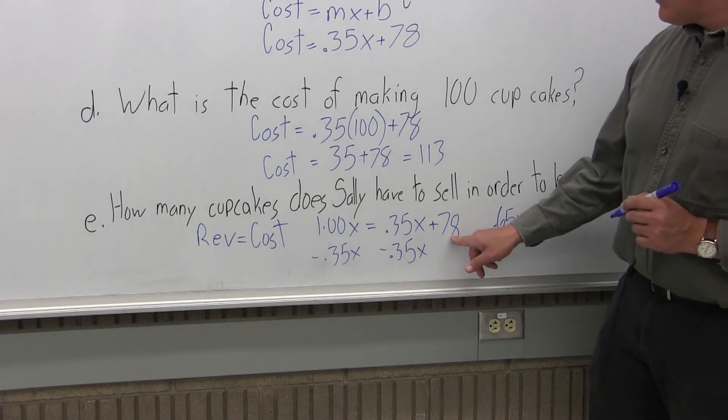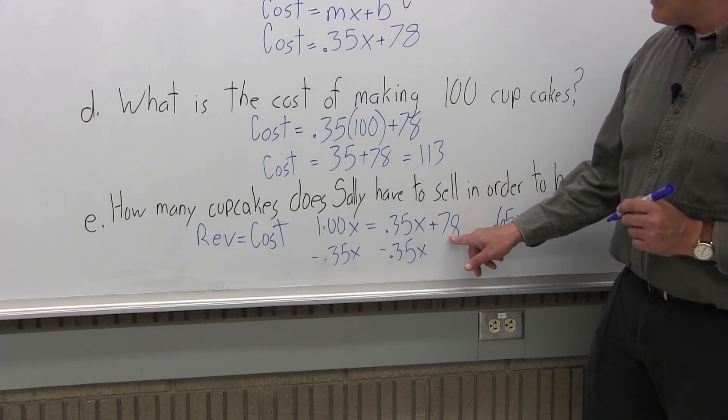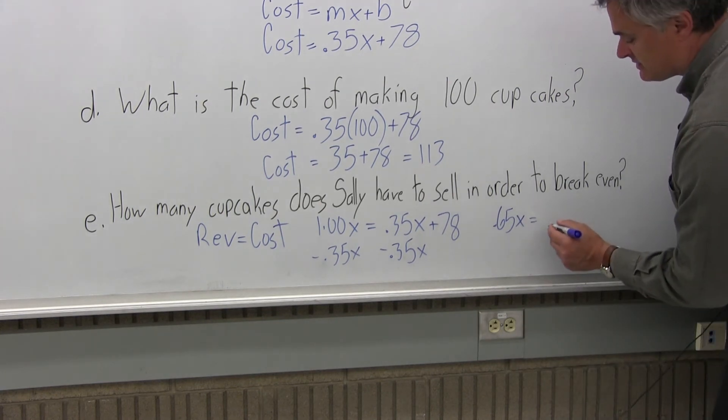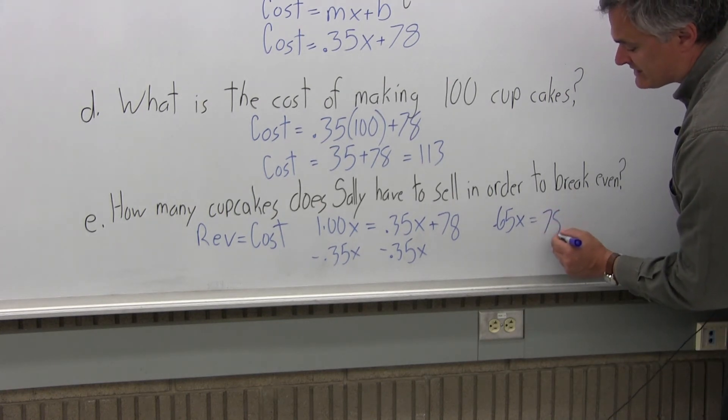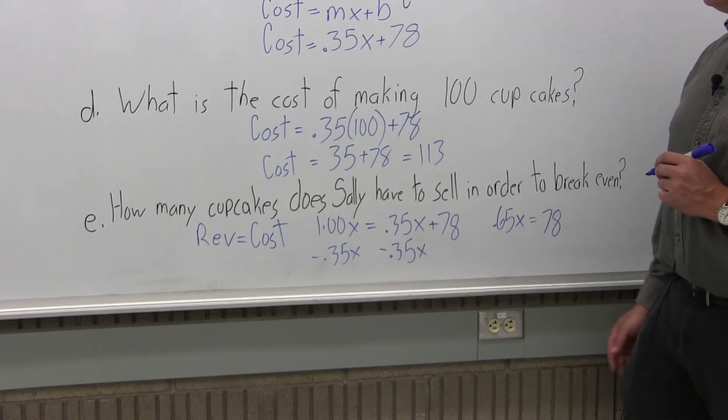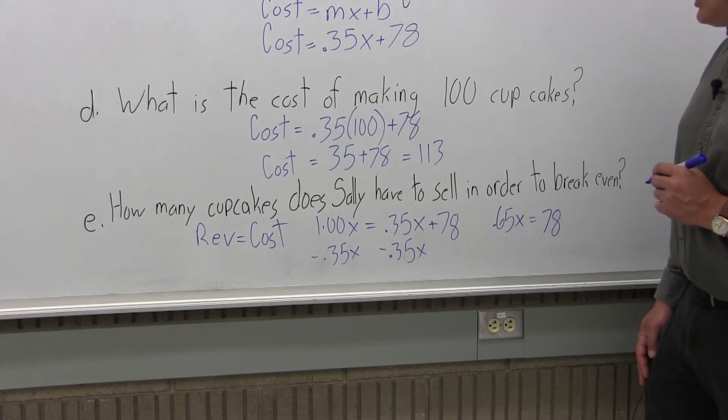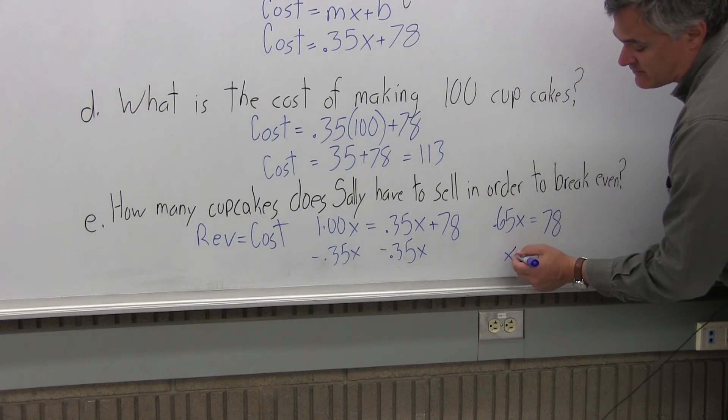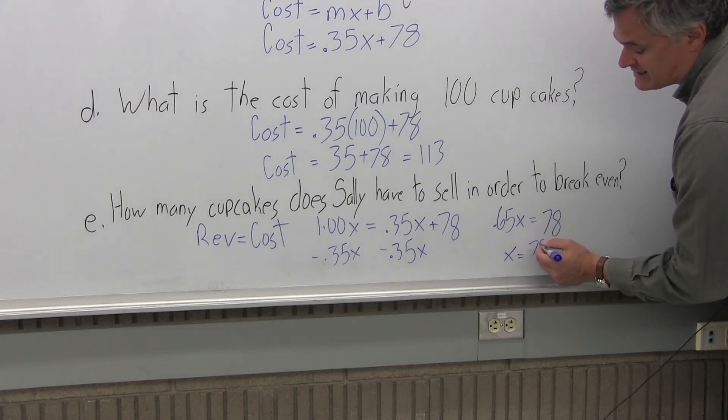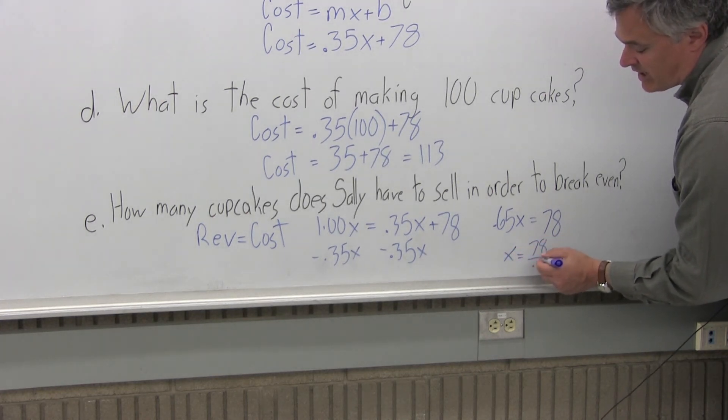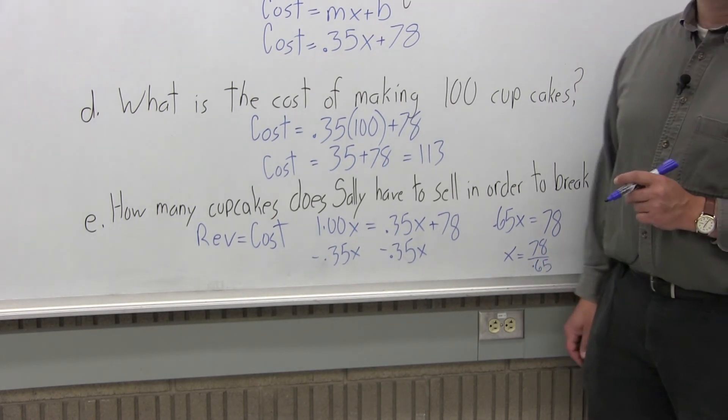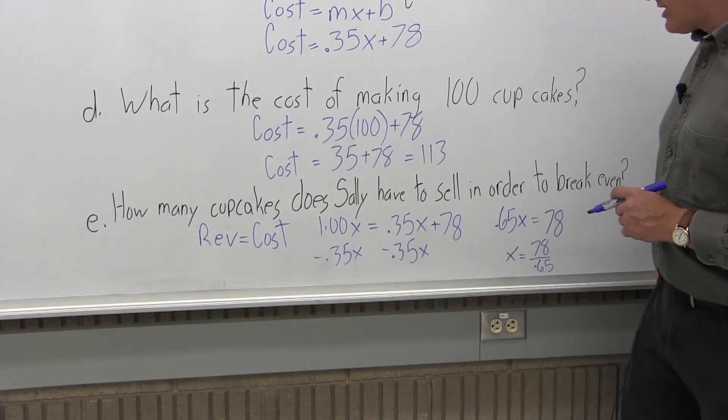And on the right, I just have 78. The positive .35X and negative .35X have cancelled. So .65X equals 78. So to solve for X, I would divide out the .65. So X equals 78 divided by .65.